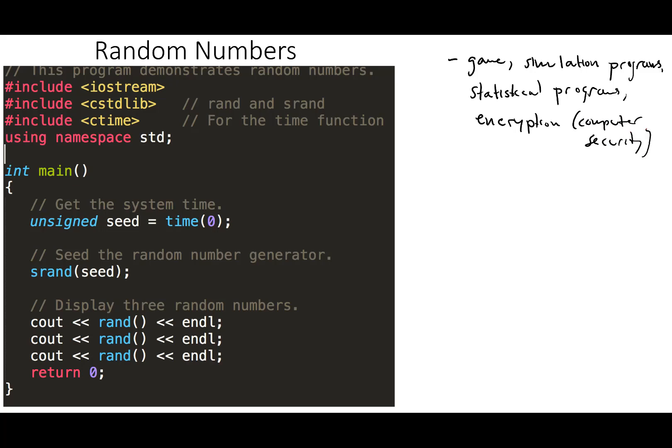So let's just look at how this random number works. First of all, there's a C++ function that generates random numbers called RAND. This is a C++ function that generates random numbers.